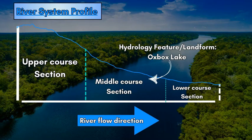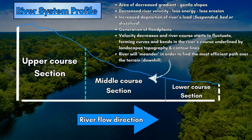A river system is separated or divided into three sections: the upper course, the middle course, and the lower course. The middle course is the focus for this video, because this is where we'll find the oxbow lake. The middle course is also called the transition section or zone, and the mature area.